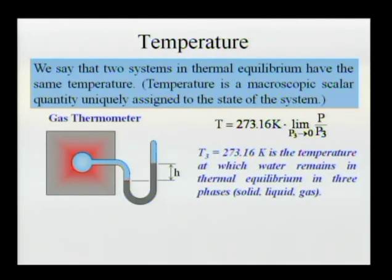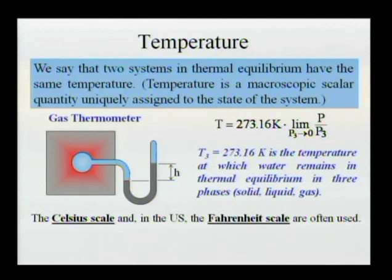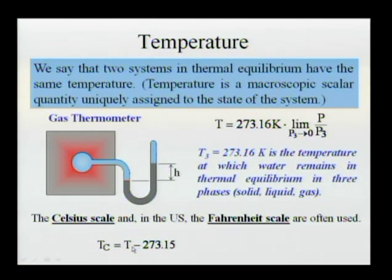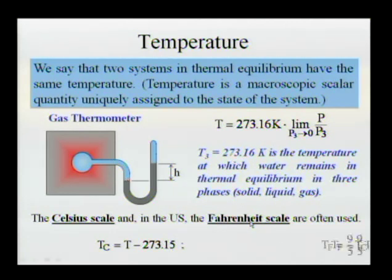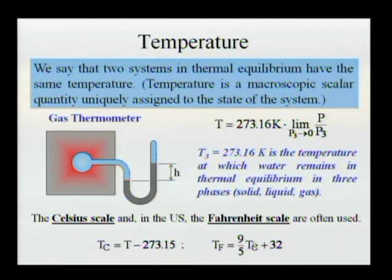T3 is the temperature at which water remains in thermal equilibrium in all three phases. Since we use other scales, we need to know how to convert. Temperature on the Celsius scale equals temperature on the Kelvin scale minus the temperature of the triple point of water. The triple point of water is zero degrees Celsius. For Fahrenheit, the conversion is: Fahrenheit equals nine-fifths times Celsius plus 32.